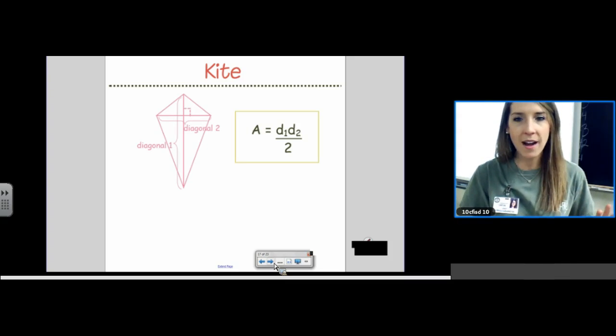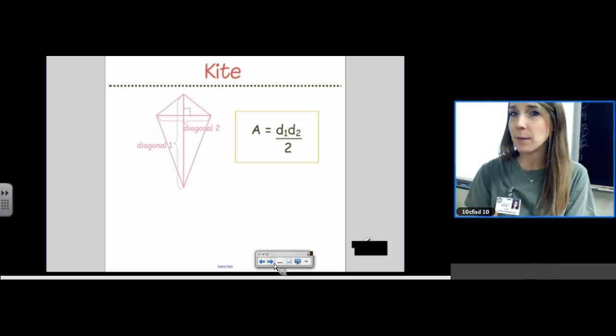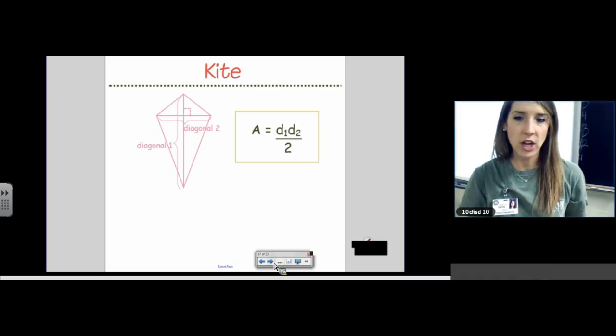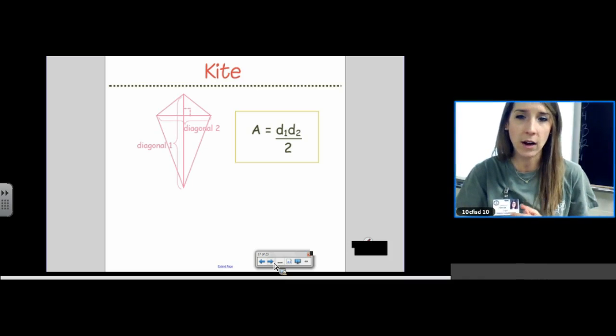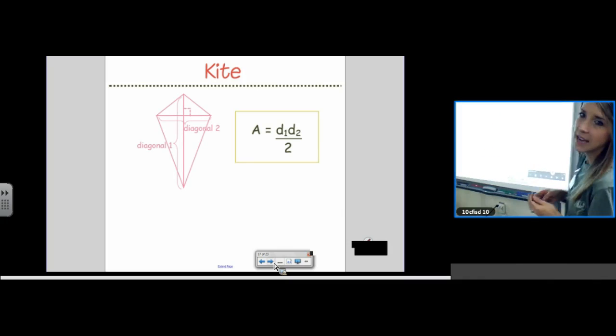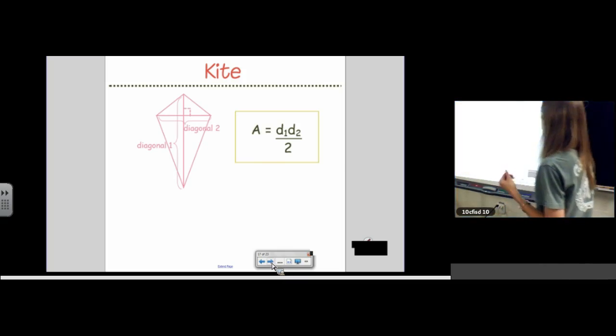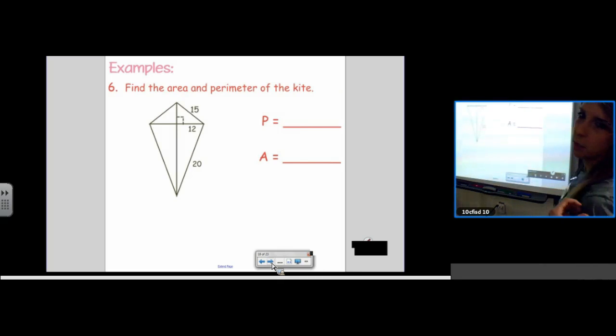And, you can kind of remember that because in both of those shapes, the diagonals are perpendicular in a kite and a rhombus. So, they share that property and they share their area formula. Diagonal 1 times diagonal 2 divided by 2. There is no plus sign. I repeat, there is no plus sign.